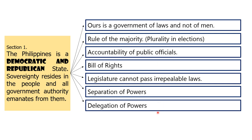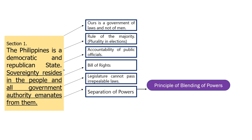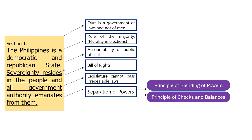Our source is Natura. For separation of powers, recall Article 6, Article 7, and Article 8 — those are the legislative, executive, and judicial departments. Relate it also to the principle of blending of powers as well as the principle of checks and balances.